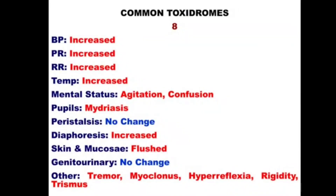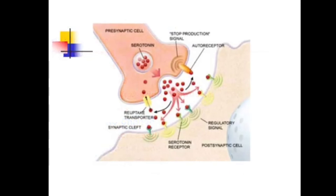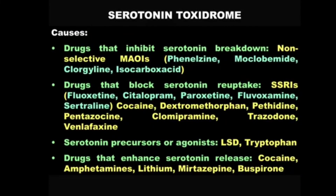Toxidrome number eight: key features include myoclonus, hyperreflexia, rigidity, trismus, agitation, confusion, mydriasis, and hyperthermia. An image associated with serotonin provides the clue — this is the serotonin toxidrome. Responsible drugs include monoamine oxidase inhibitors, SSRIs (selective serotonin reuptake inhibitors), drugs that enhance serotonin release, and serotonin precursors or agonists. These are very commonly used drugs in clinical practice, making serotonin toxidrome quite common.